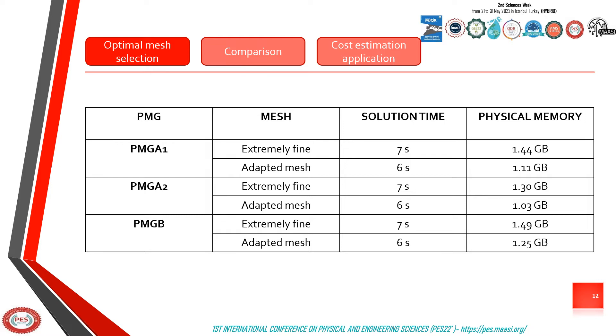The data storage space for the extremely fine mesh is 29.72%, 26.21%, and 19.2% larger than for the adapted mesh in PMG A1, PMG A2, and PMG B respectively.